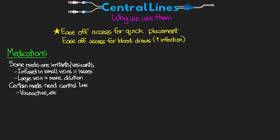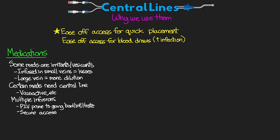If we don't have a central line but need to get vasoactive medication started quickly, we absolutely will use a peripheral IV but then work quickly at getting central line access and switching it over. For really sick patients we often have many infusions going on. While we can do this with peripheral lines, those lines are prone to going bad or infiltrating, and many of the infusions for these patients are ones we don't want to suddenly stop. Having the secured access of a central line gives us peace of mind that the patient will continue to receive their medication.